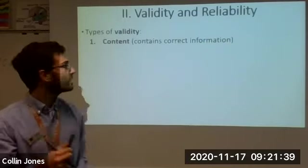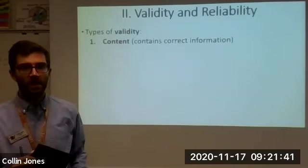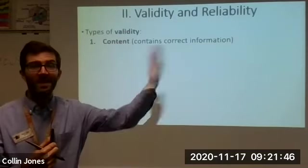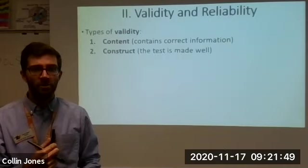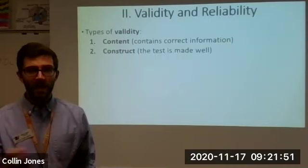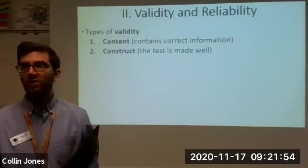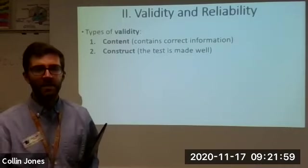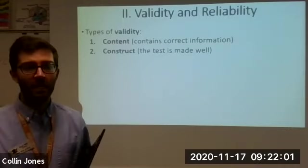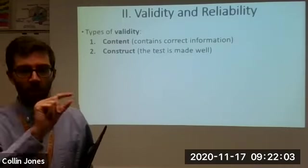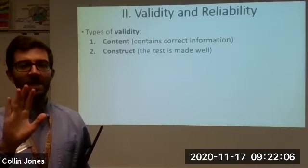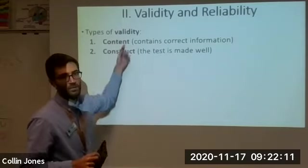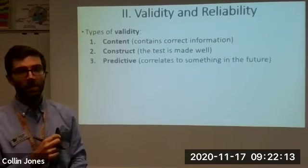So three types of validity. First, the content should be correct. It should be over the right stuff. Unit five test would cover unit five stuff, not unit six and seven material. Construct. The way that it is made, it should be readable. It should go in order. It should make sense. You need the technology to work. I once gave a test, and the printer had been running out of ink. So some kids got it where the words were super clear on the paper version of the test, and some kids got it where the words were super faded and gray. That test lacked construct validity. The test was not made well.